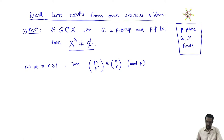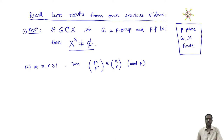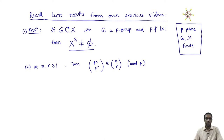The second result was one of our applications of this basic fixed point principle, which said that if I take any two natural numbers n and r, then the binomial coefficient p^n choose p^r is congruent to the binomial coefficient n choose r modulo p. I am recalling both of these specifically because I am going to use them together.